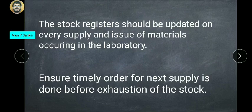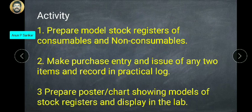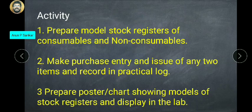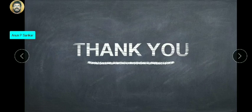That is the fourth experiment. You can use the activities side of the stock register. We can prepare a model format for the consumable or non-consumable format. I will create a format — name of the item, for example sodium hydroxide. These three are the activities. Thank you all.